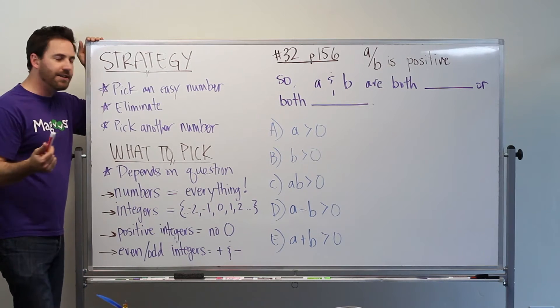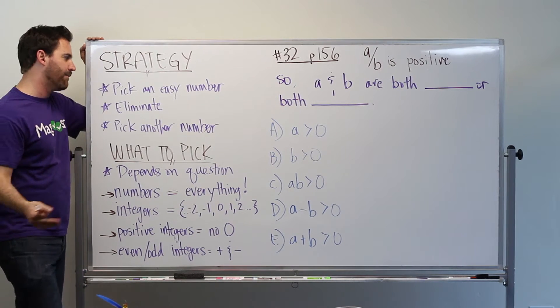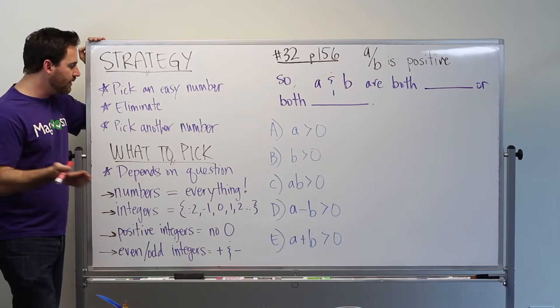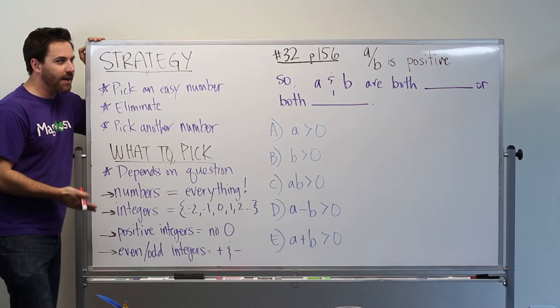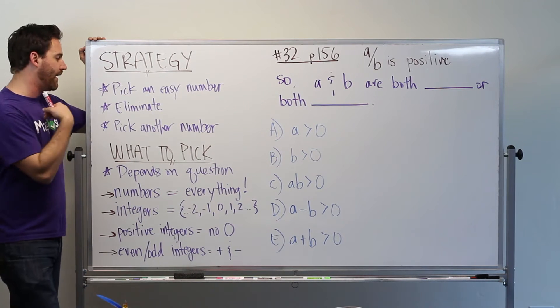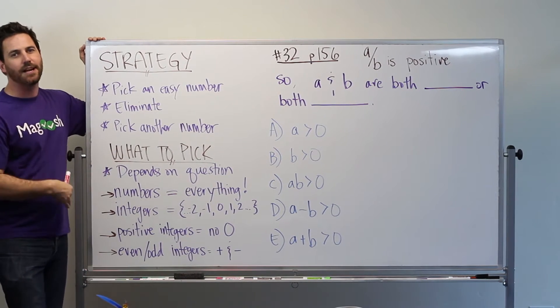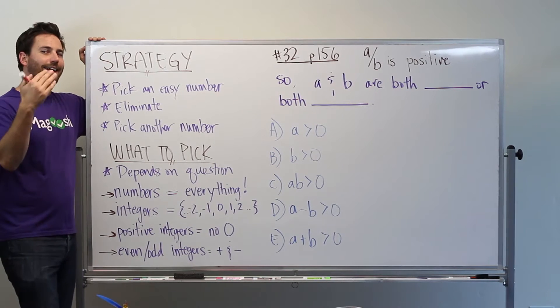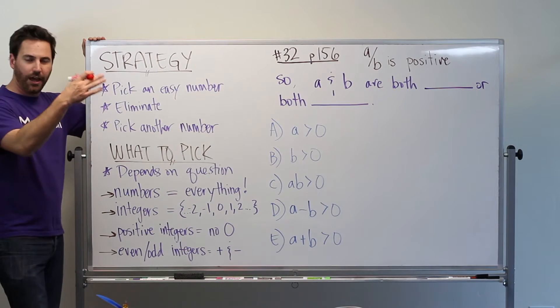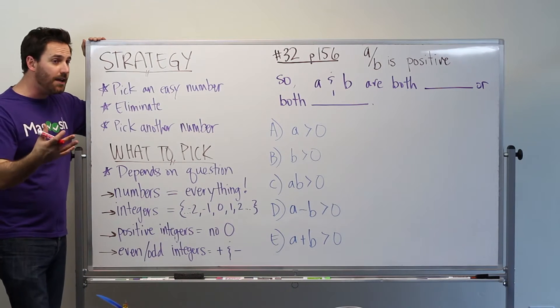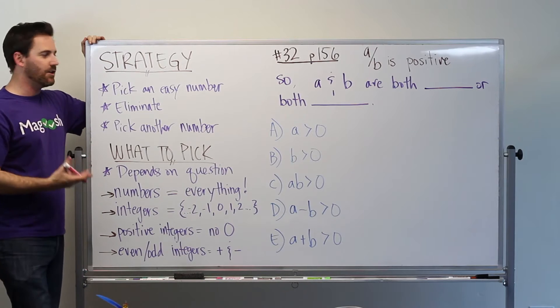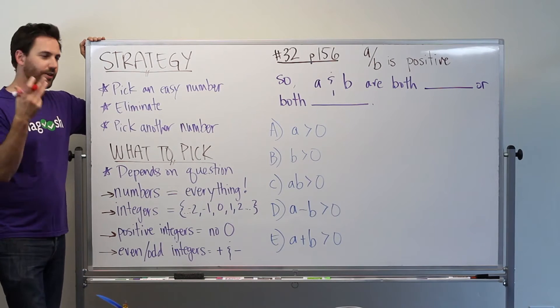So the strategy here is, because you are dealing with variables, you're going to be picking numbers. Make sure that you pick an easy number to start with, eliminate answer choices, maybe you eliminate three, then go back and pick another easy number, continue to eliminate until you're left with one answer choice. So you want to focus on speed but also accuracy here. You can be efficient if you're smart about picking your numbers.